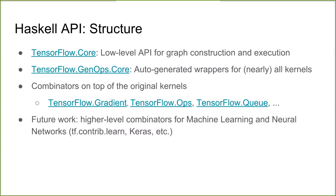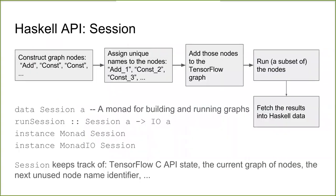What is the session monad actually doing? It constructs a graph by creating individual nodes like addition and constants. When we talk to the TensorFlow runtime, we need to give these nodes unique names so it can distinguish between, say, two constant nodes. The session monad keeps track of all the bookkeeping — holding FFI data from TensorFlow, the current graph, and the unique identifier. It's an instance of Monad and MonadIO, so you can lift arbitrary IO actions into it.